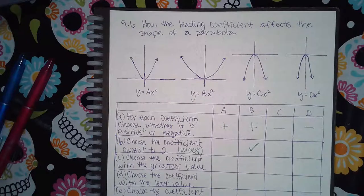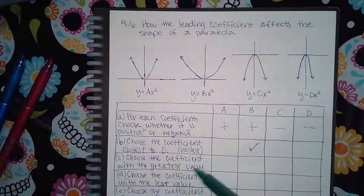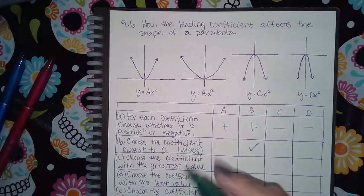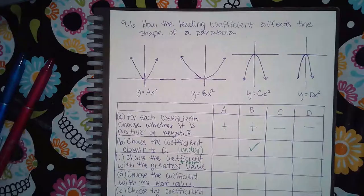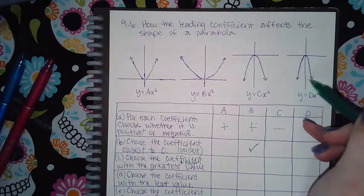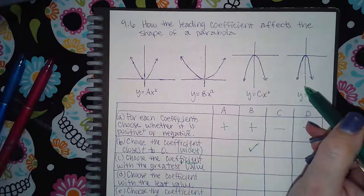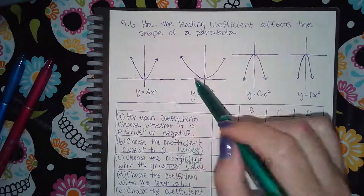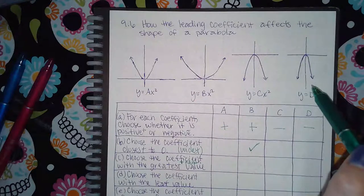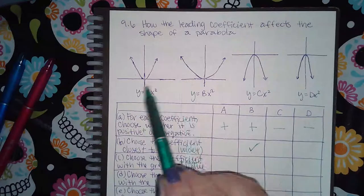Then it's going to say choose the coefficient with the greatest value. You have to be careful here because yes it is the most narrow, but it's the most positive narrow. I mention that because this one is the narrowest one of all the graphs, but this is not the correct answer because it's a negative value, which means it doesn't have the greatest value. A positive number would have a value greater than a negative number. So between the two positive graphs, you need to decide which one's more narrow.